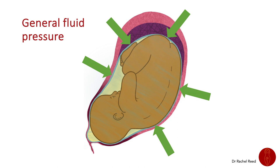During a contraction, the pressure is equalized throughout the fluid rather than directly squeezing the baby, placenta, and umbilical cord. This is called general fluid pressure, and it protects the baby and their oxygen supply from the effects of powerful uterine contractions — so the placenta isn't getting squeezed as much, and the baby or cord is not getting compressed.